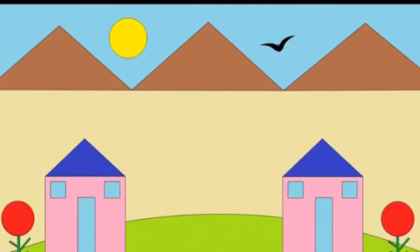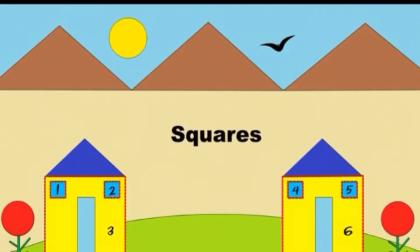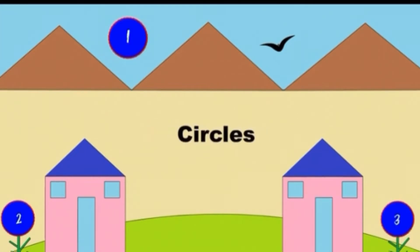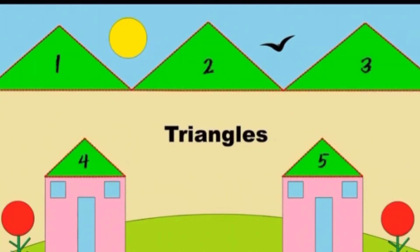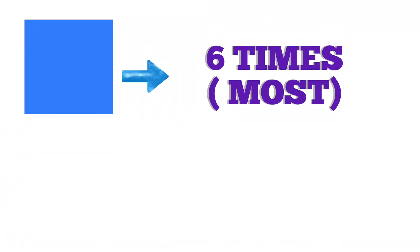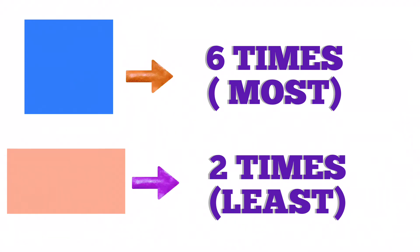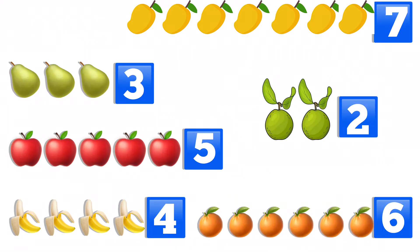Let us count the number of four shapes one by one in this picture. There are six squares, two rectangles, three circles, and five triangles. Children, please note that the square shape has come the most number of times — that is six times — and the rectangle shape has come the least number of times — that is two times.